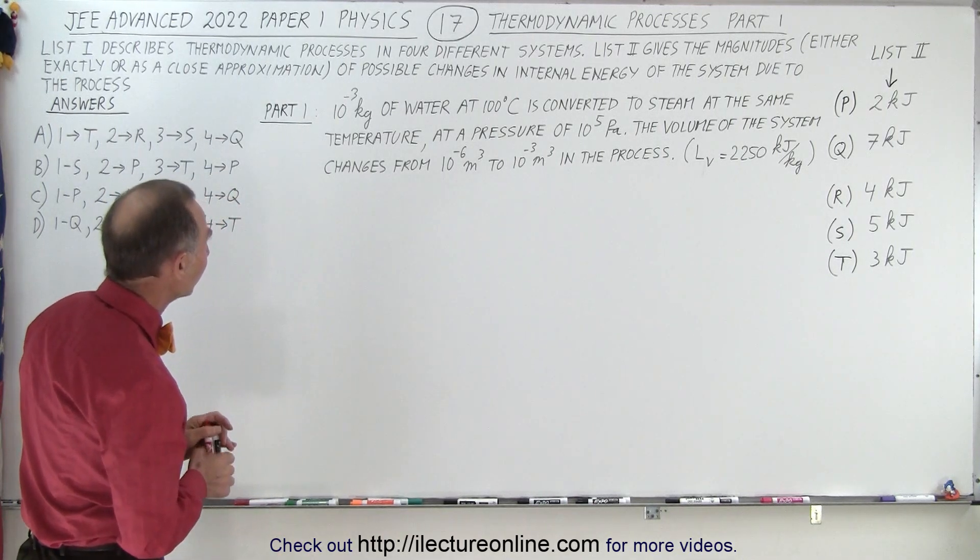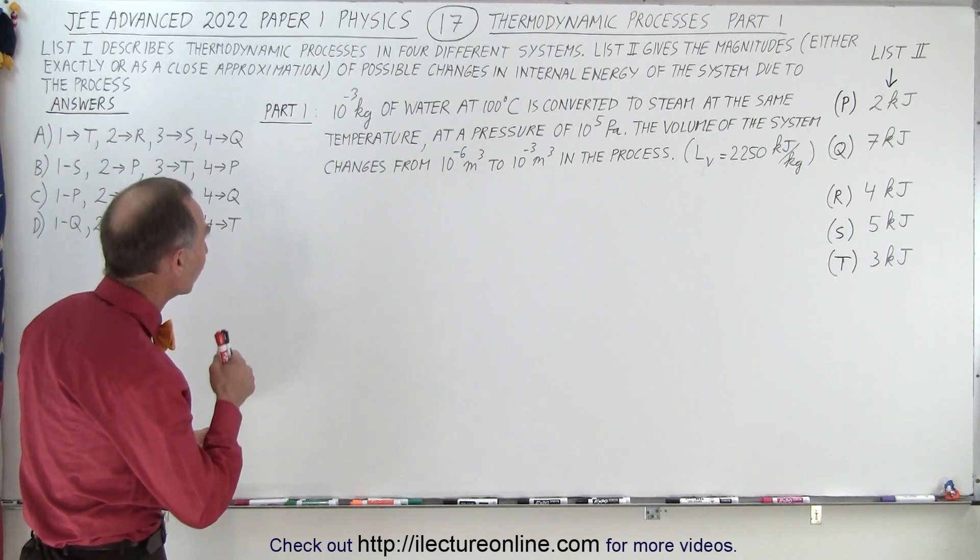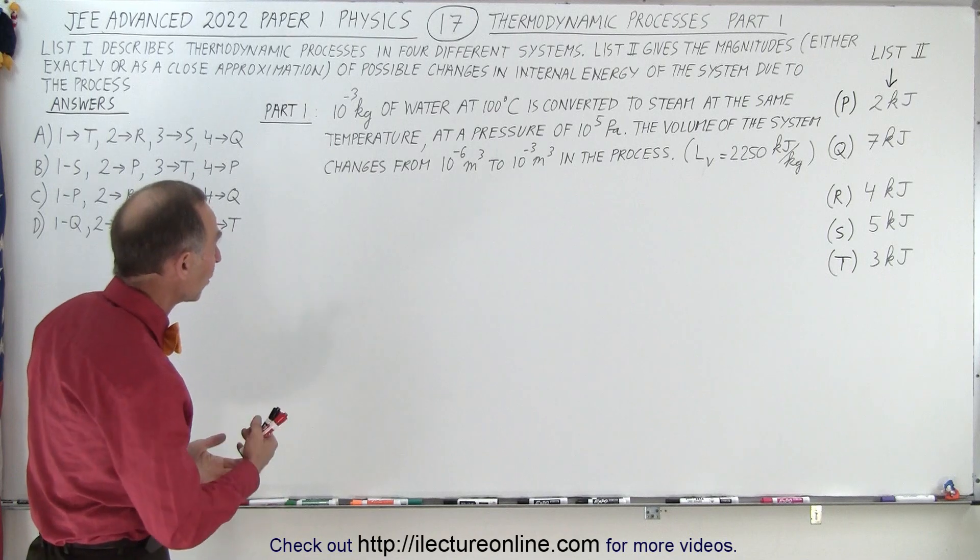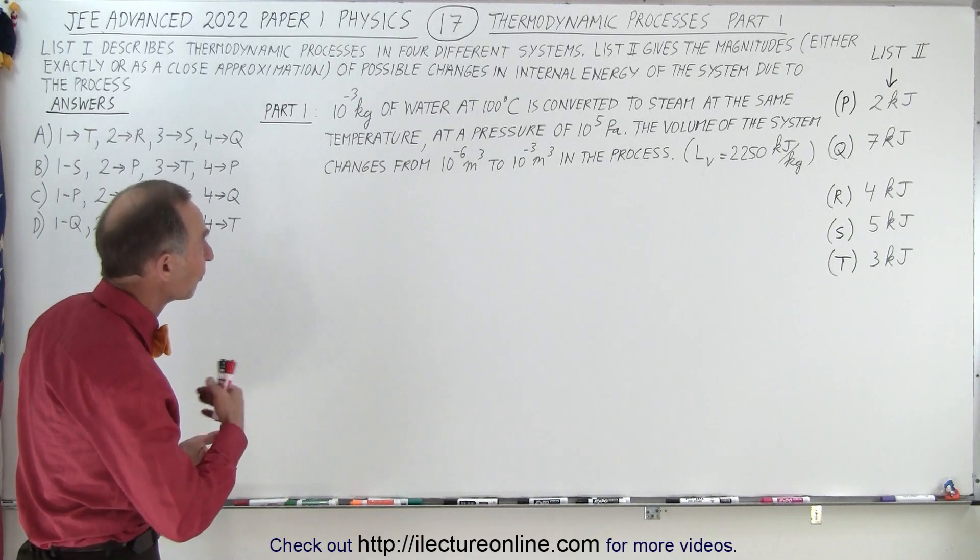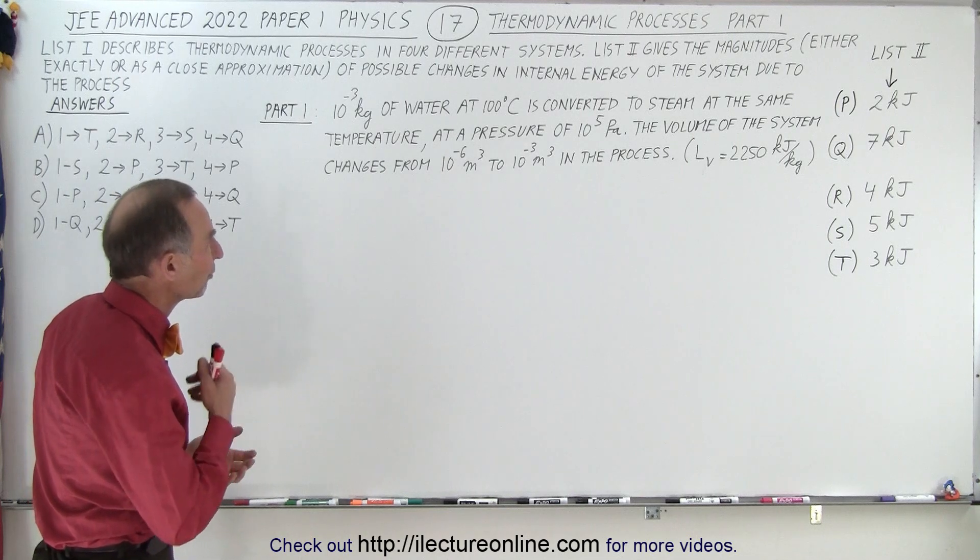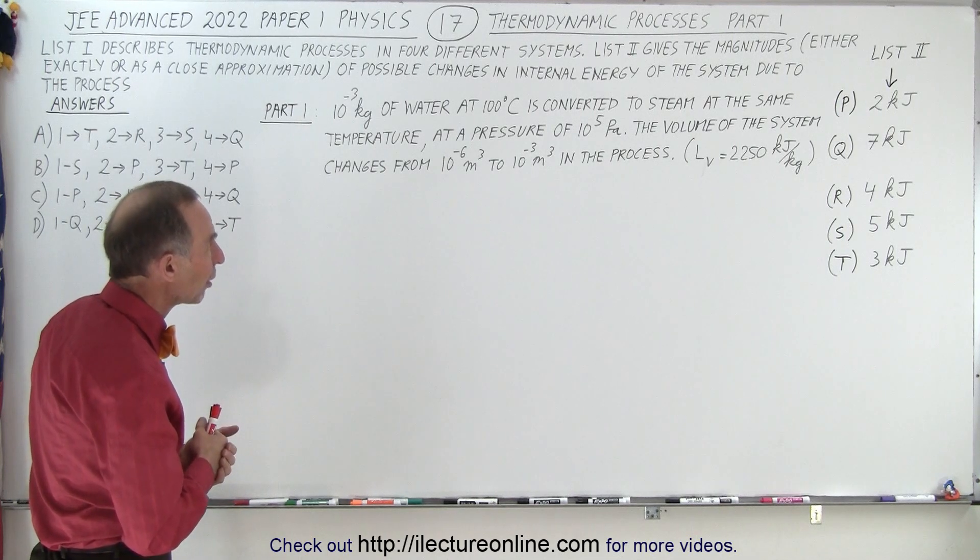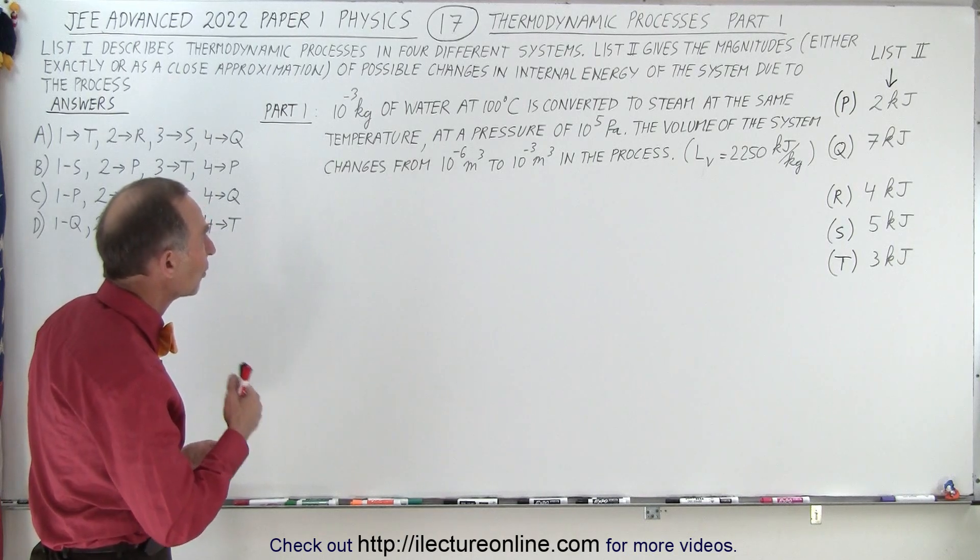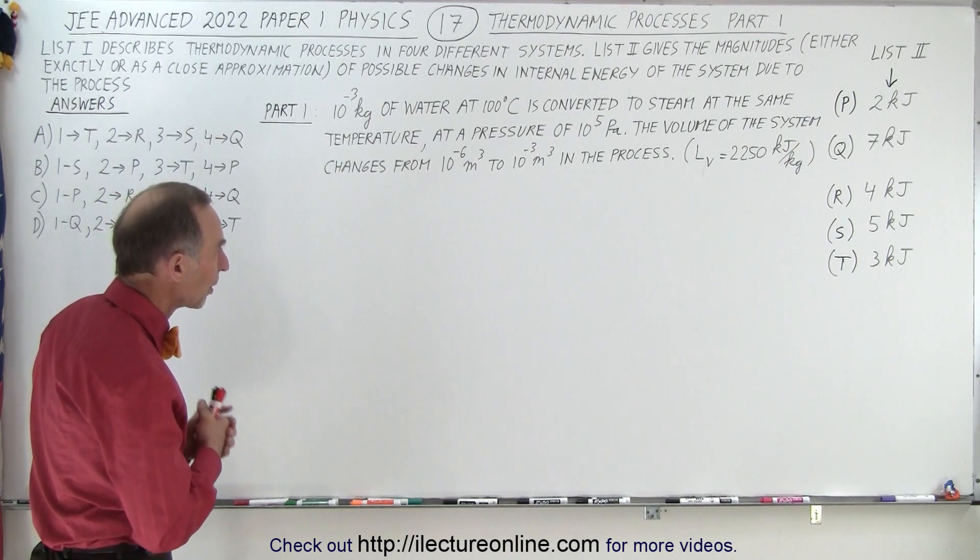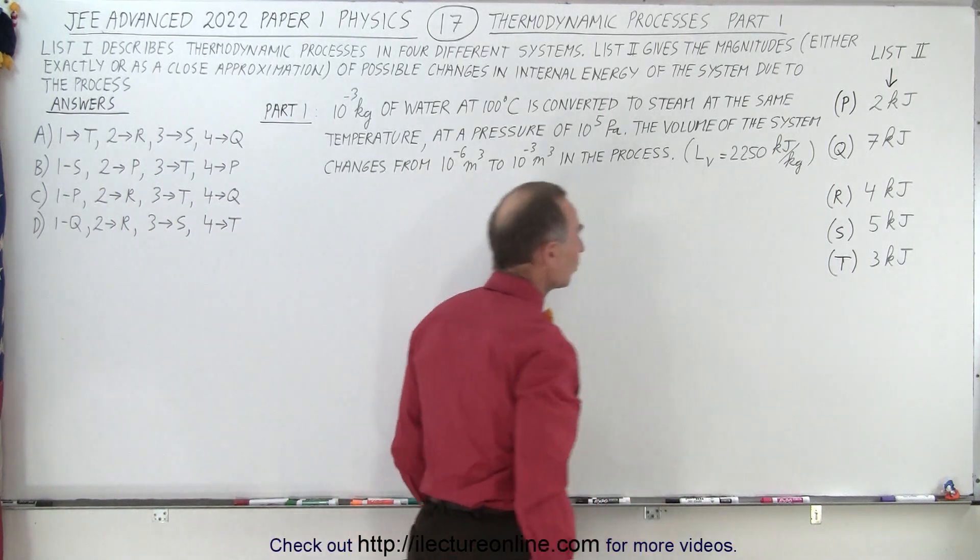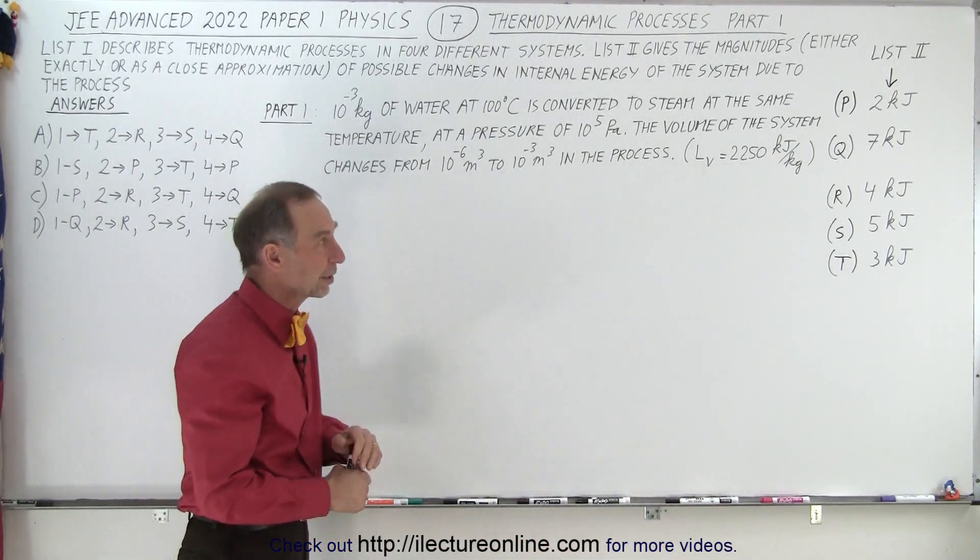The first system has 10^-3 kilograms, essentially a gram, of water at 100 degrees Celsius converted to steam at the same temperature at a pressure of 10^5 Pascals. The volume changes from 10^-6 cubic meters to 10^-3 cubic meters, and the latent heat of vaporization is 2250 kilojoules per kilogram.